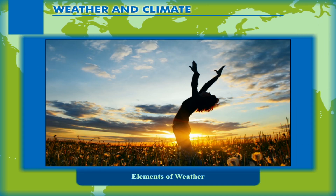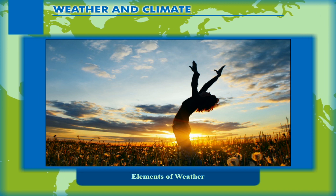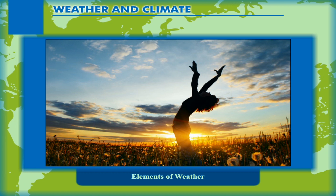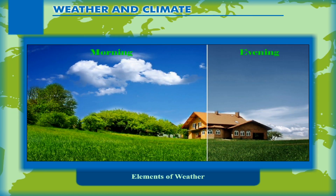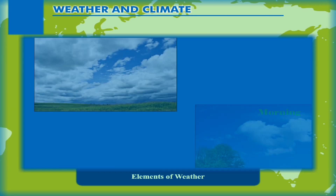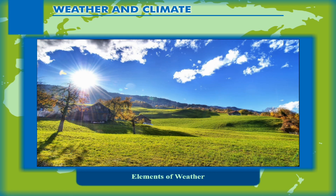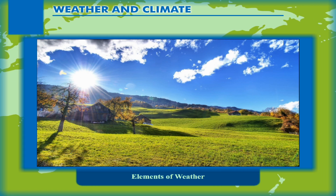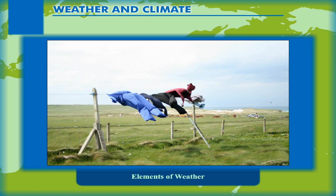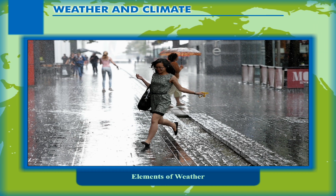Elements of weather. When we get up every morning, the day may not seem to be the same always. Not only from one day to the other but also from morning to evening, the atmospheric conditions may show a variation. Sometimes we may see clouds in the sky, the next day it may be bright sunshine, and yet another day there may be strong winds or even rainfall. This is what is known as the changing weather.